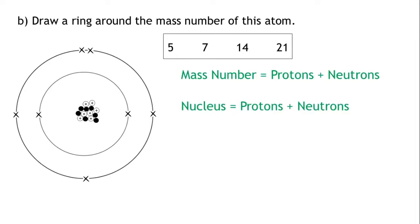So if we count up the number of particles in the center of the atom, we find there are seven protons and seven neutrons. Seven plus seven, 14. Therefore, the mass number of this atom is 14.